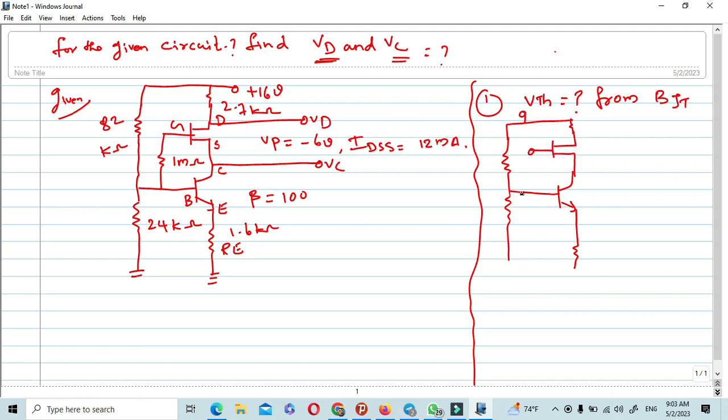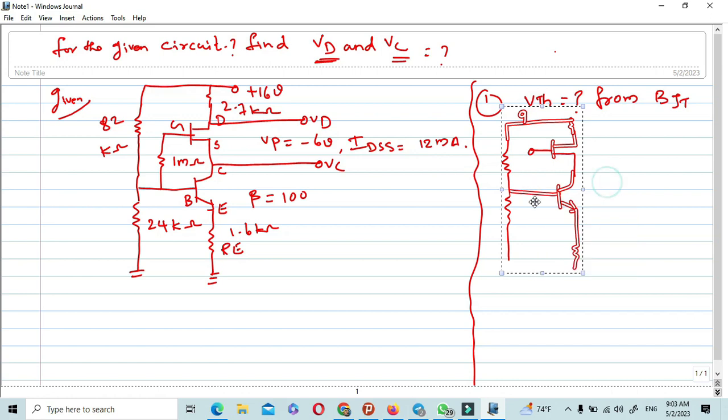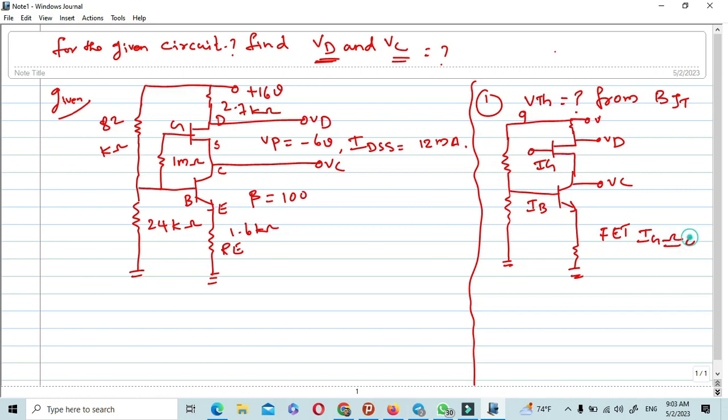This is open circuit. This is for IB, this is for IG. This is for VD, this is for VC. From this, check now why IG is open. Because in FET, everyone knows IG is approximately equal to zero.